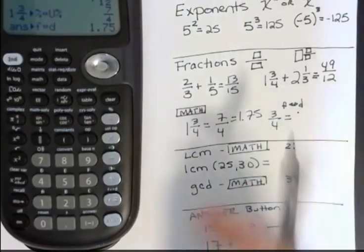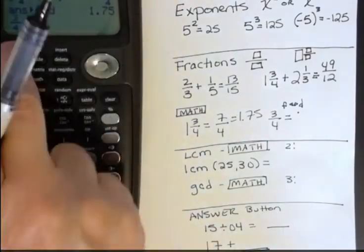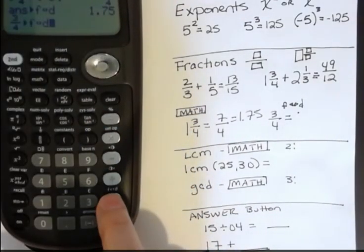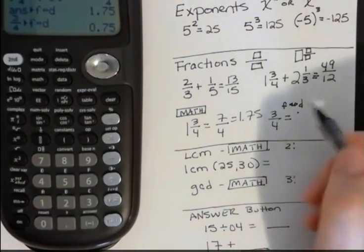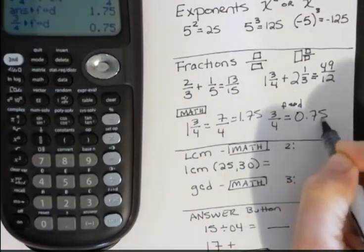So three fourths as a, from a fraction to a decimal, is 0.75. All right.